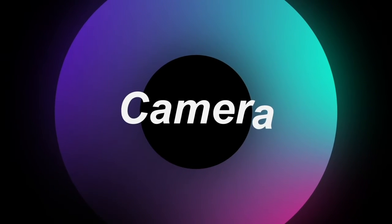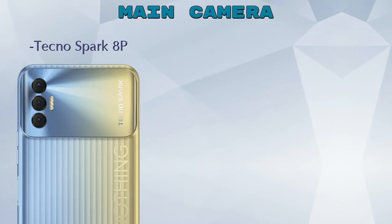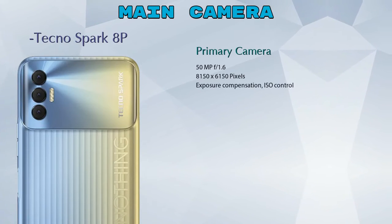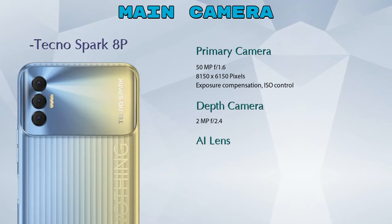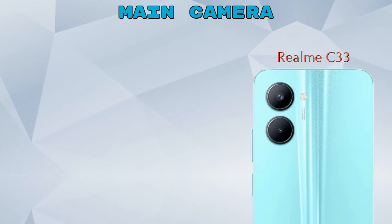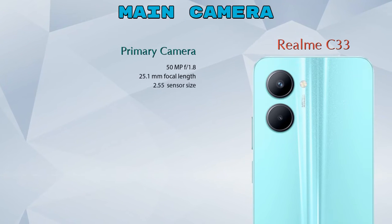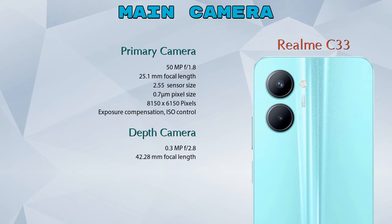Now let's talk about our favorite feature: camera. For the rear camera, Spark 8P has three cameras — a primary camera, depth camera, and AI lens. Realme C33 has two cameras: a primary camera and a depth camera.